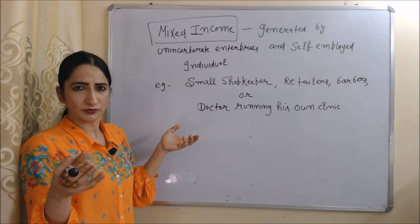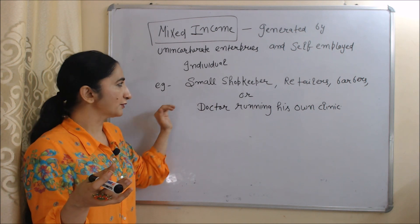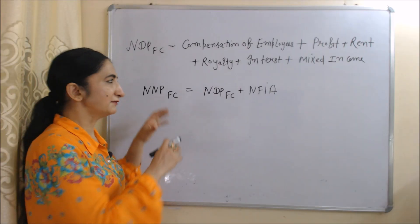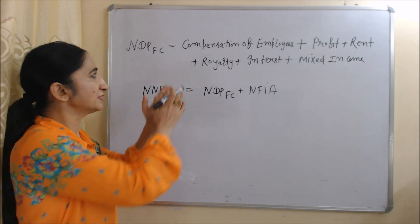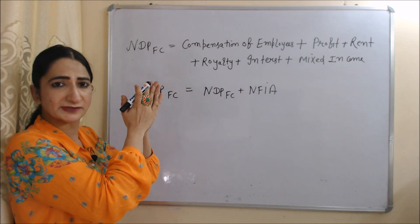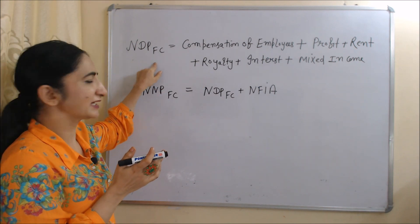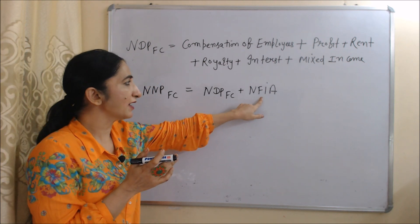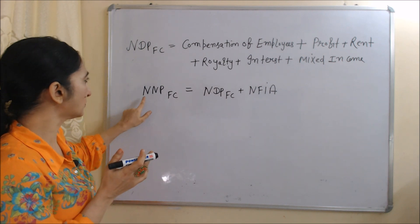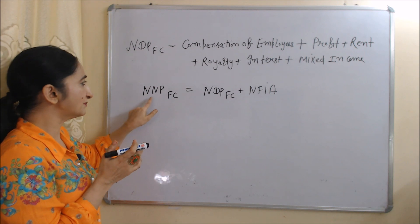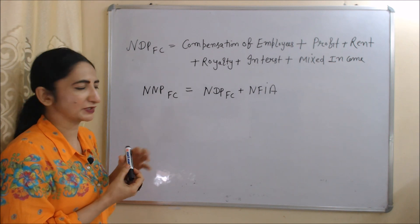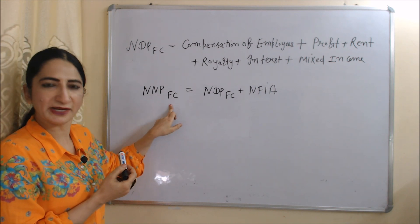The last component of factor income is mixed income, which is generated by unincorporated enterprises and self-employed individuals — for example, small shopkeepers, retailers, barbers, or a doctor running their own clinic. When we add all components of factor income — compensation of employees, profit, rent, royalty, interest, and mixed income — it becomes NDP at FC. Adding Net Factor Income from Abroad (NFIA) to NDP at FC gives NNP at FC, which is our national income.